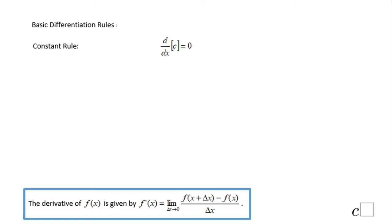Welcome, or welcome back, at C Squared. In this clip we're going to talk about basic differentiation rules, and I'm going to start with the constant rule first, which says the derivative with respect to x of a constant — a number — is zero. So let's prove this.